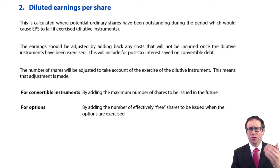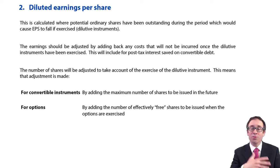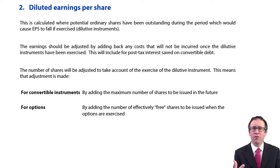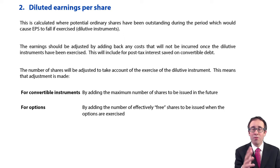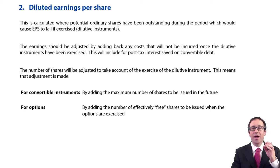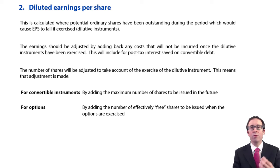That increase in the number of shares doesn't directly translate to an increase in your earnings. If shares are issued and earnings aren't going to increase, then your earnings per share is going to be diluted — it's going to be reduced. Given that these instruments are in position at the reporting date and will be converted into shares at some point in the future, we should alert shareholders that these instruments exist and work out what that diluted EPS is.